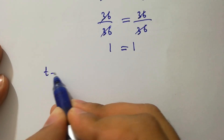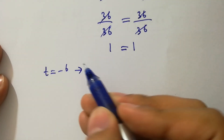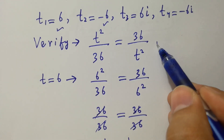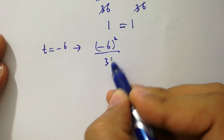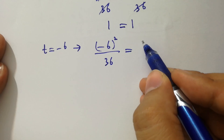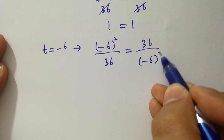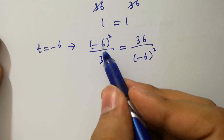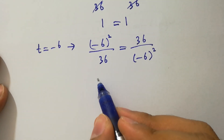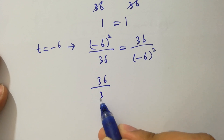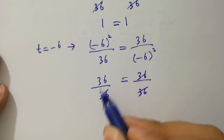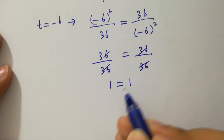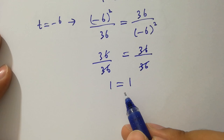Now take t equals minus 6. It will be (minus 6)² over 36 equals 36 over (minus 6)². Since minus times minus plus, and 2 is even, it will be 6 times 6, so 36 over 36 equals 36 over 36. We have 1 equals 1, left hand side equals right hand side.